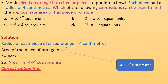Mohit sliced an orange into circular pieces to put into a bowl. Each piece had a radius of 4 centimeters. Which expression can be used to find the approximate area of this piece of orange? The area of a circle is π r². With r = 4 cm, the area will be π × 4² square units. Correct option is A.